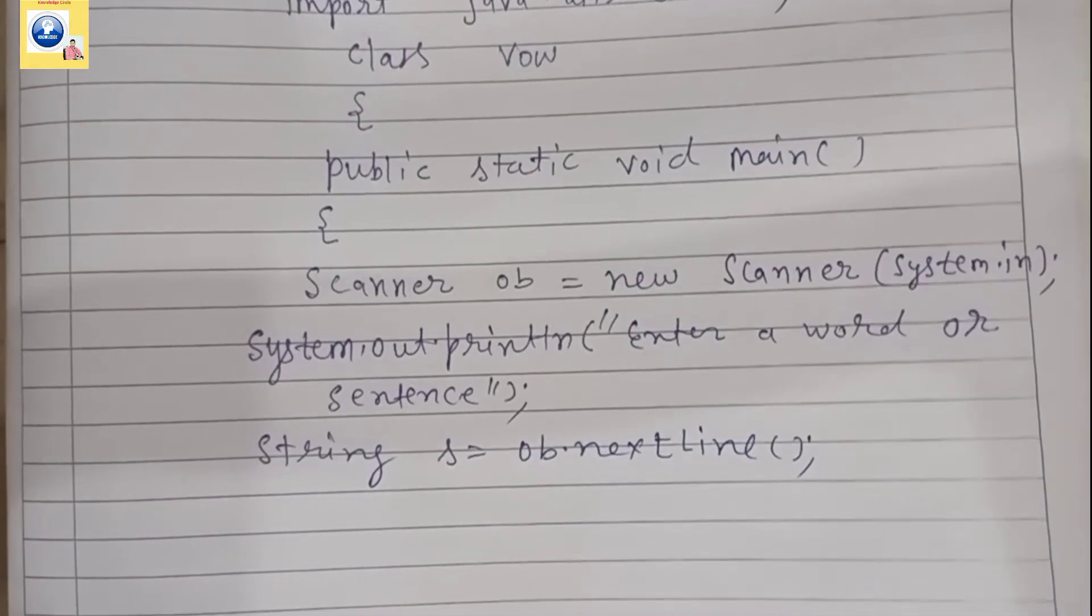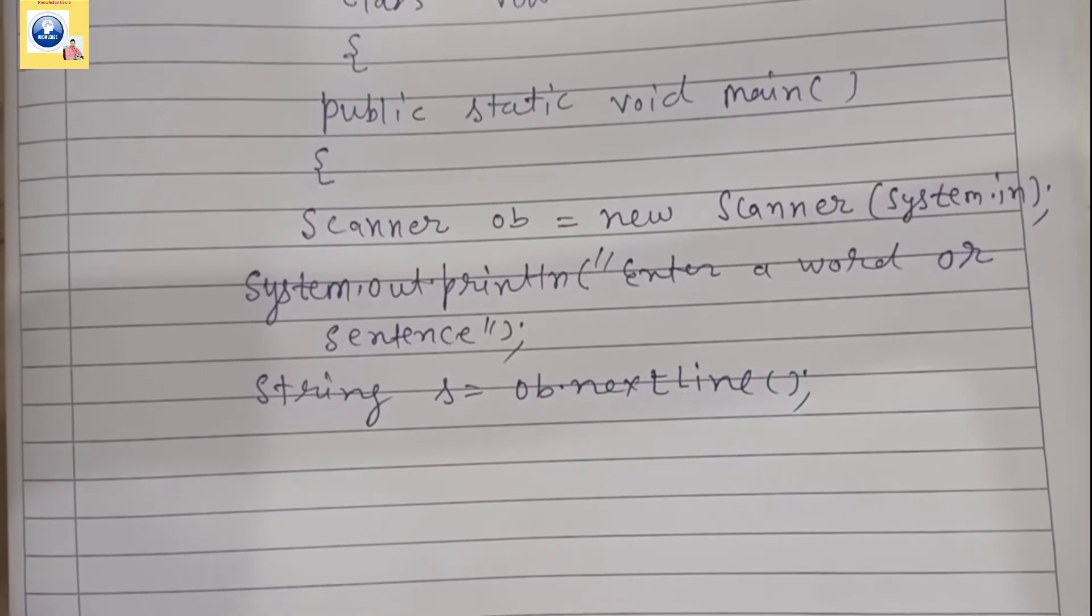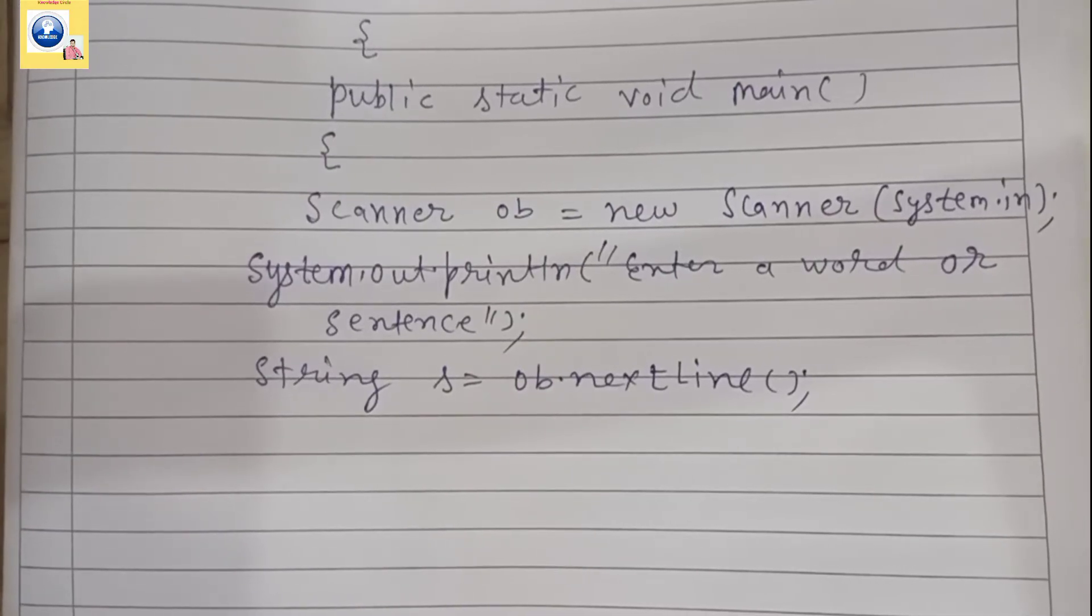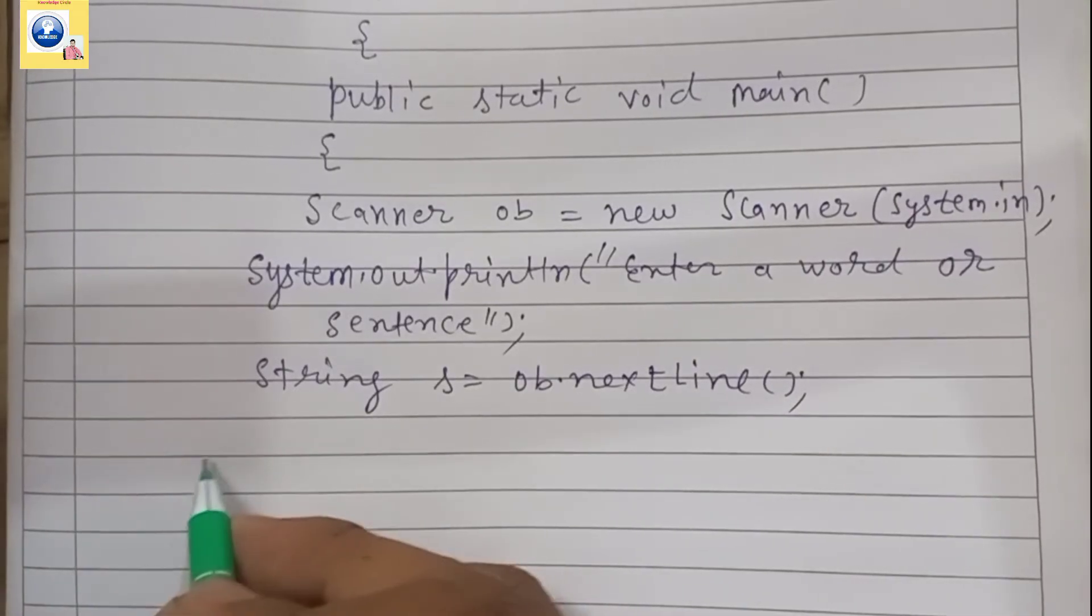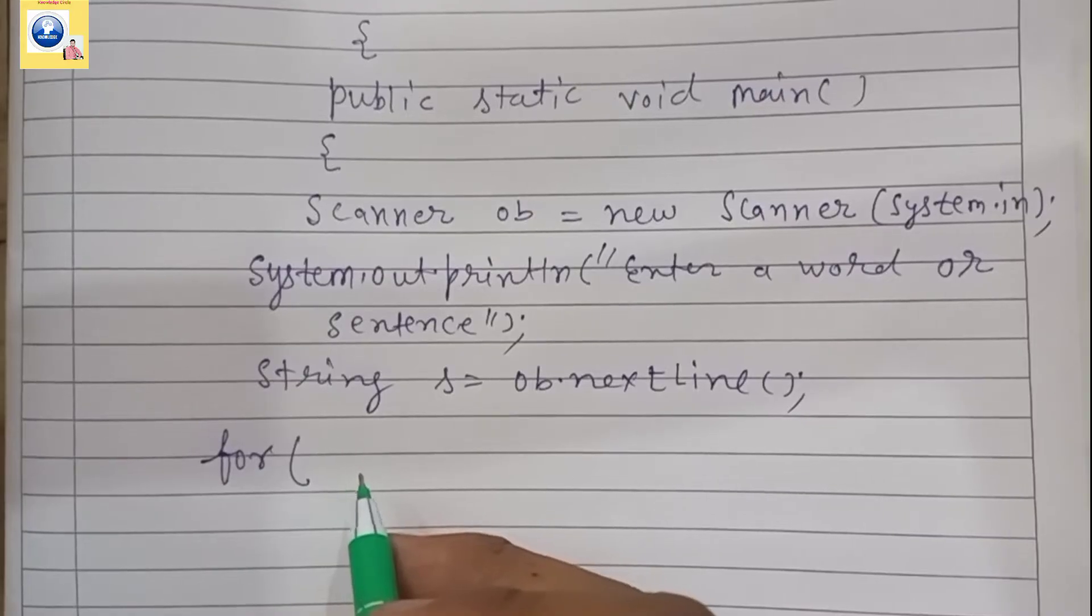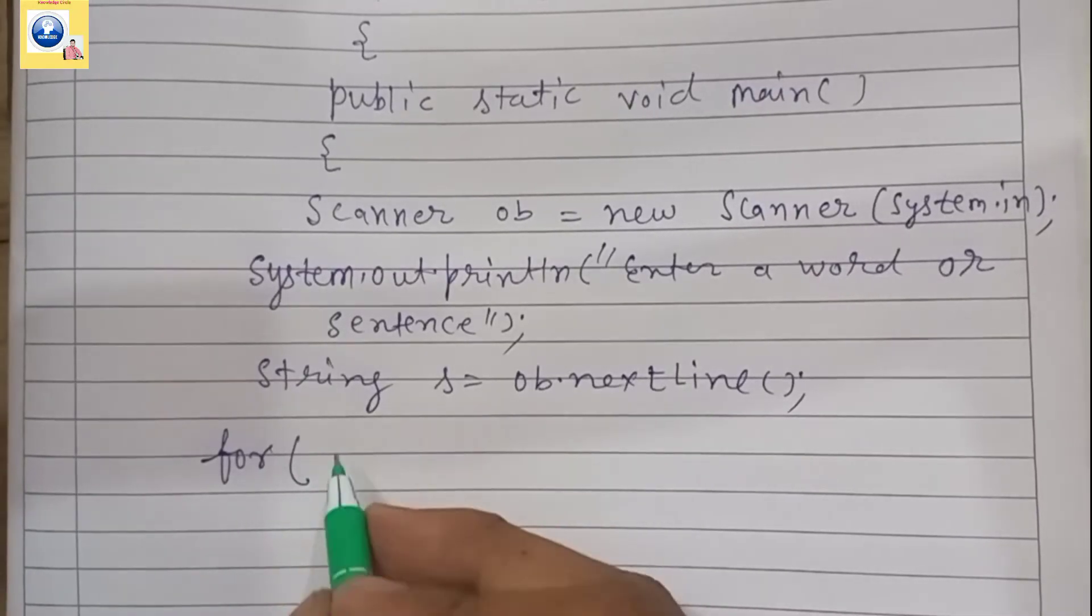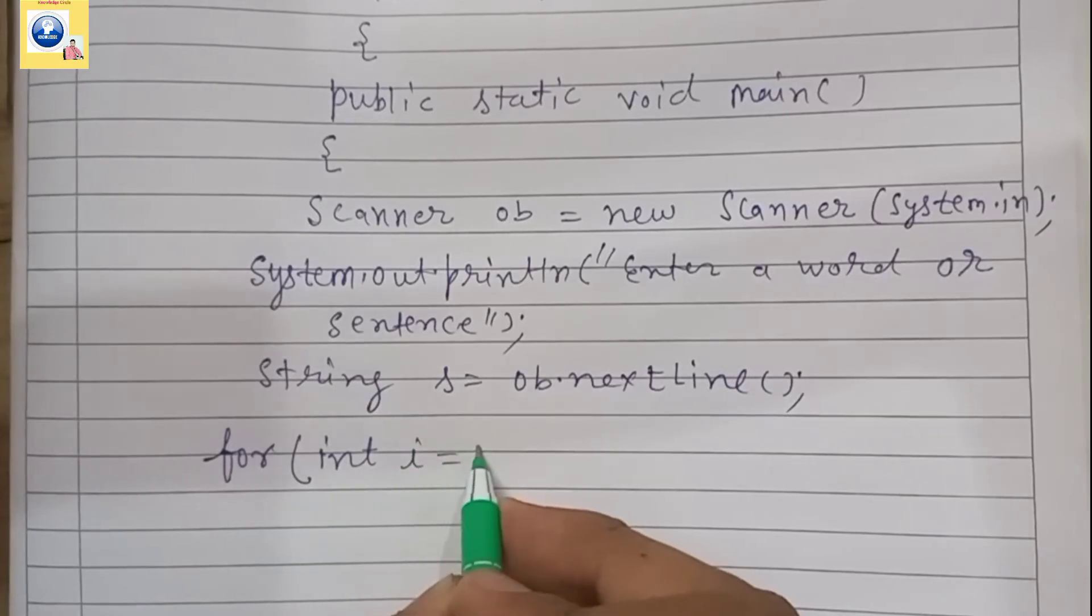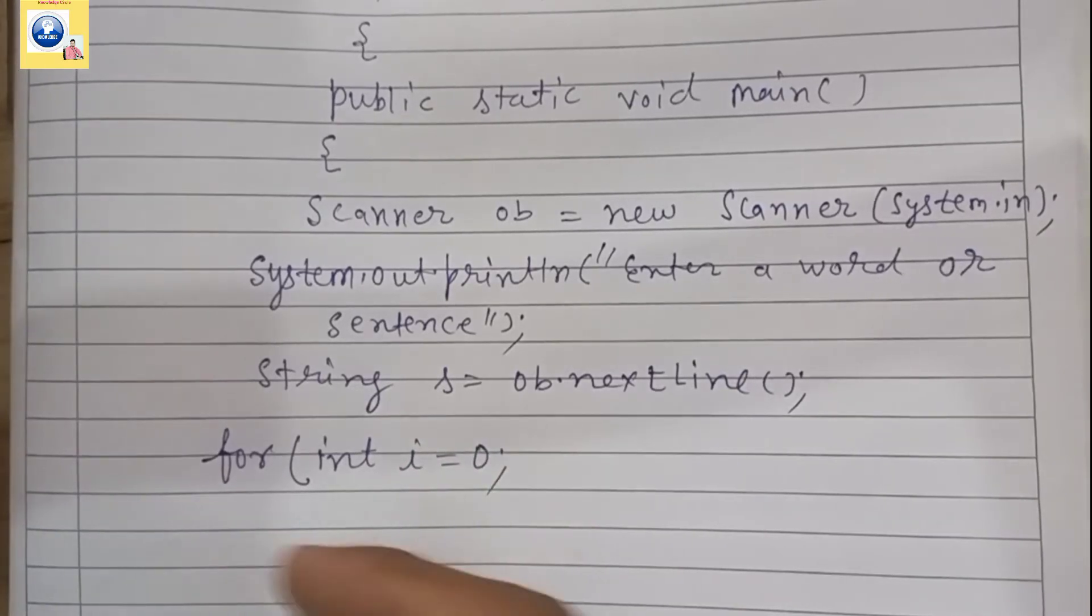This is declared now. Now we have done the input work, it's time to remove the vowel. For removing the vowel, we are going to run a loop. We have to go through each and every character of the string.